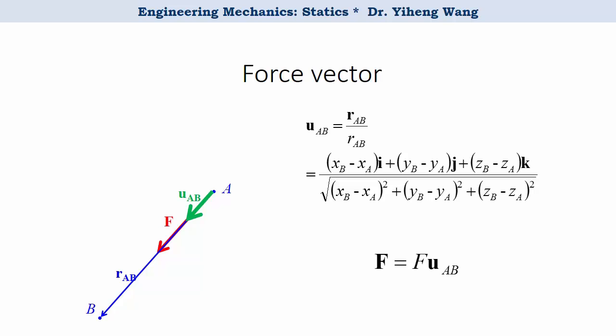Therefore, vector F equals to its magnitude multiplied by the unit vector uab. Please note, just like the number 1, unit vectors are dimensionless, but position vectors and force vectors and also other physical quantities all have their appropriate units such as meters or newtons.